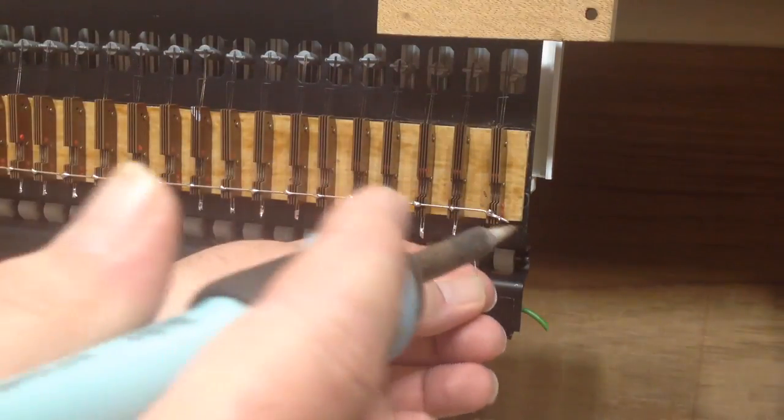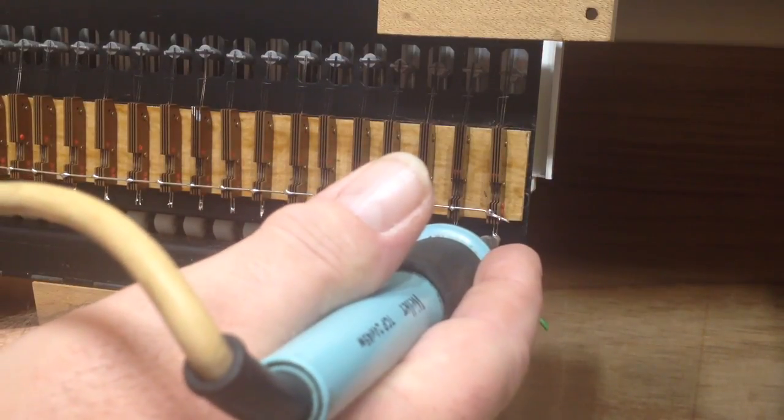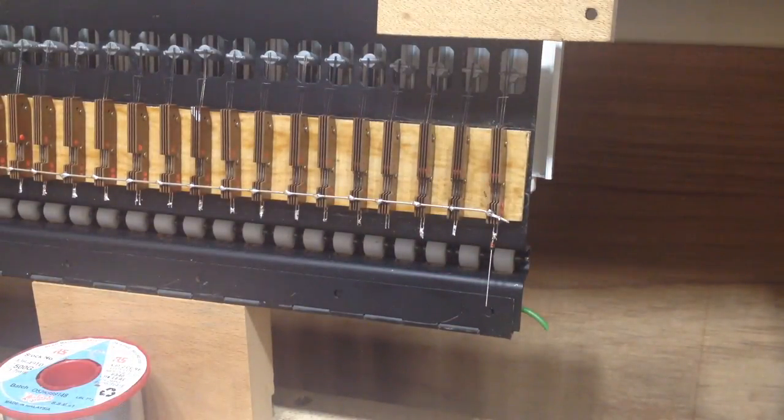And then holding it against the end of the key, which has previously been tinned, it has solder on it already, just a quick touch with the iron, and there we are. That is now attached to our key.